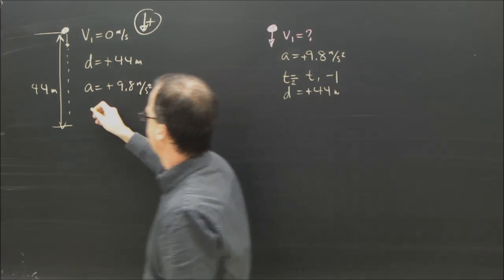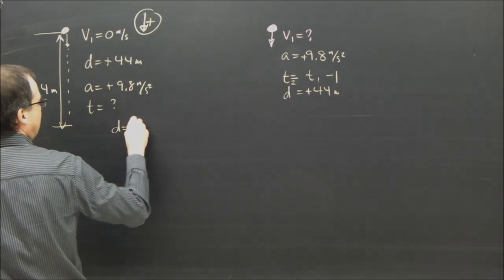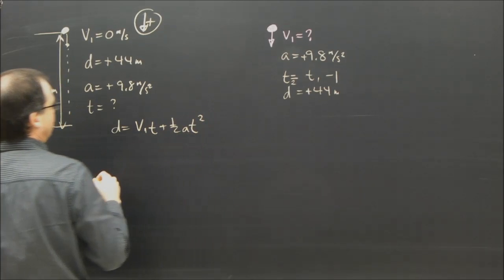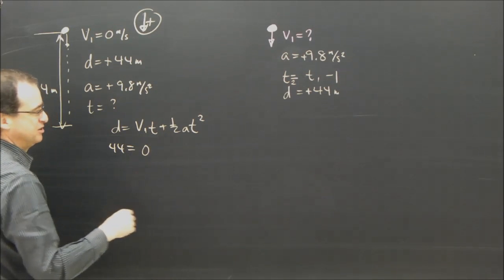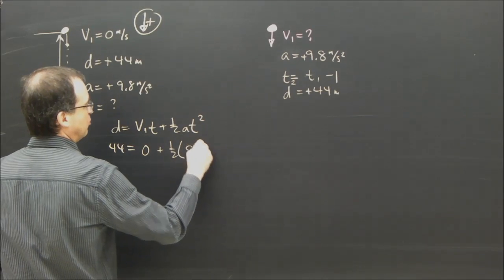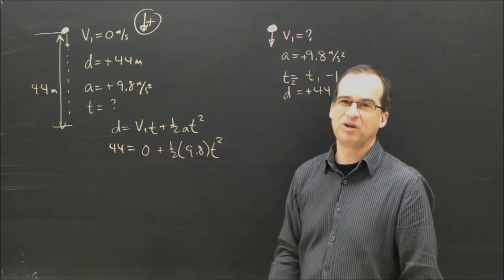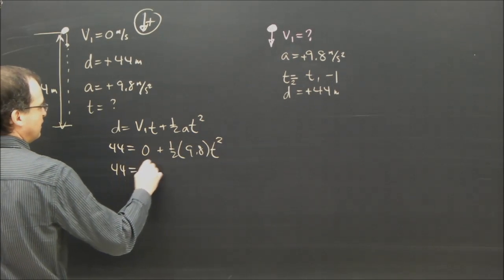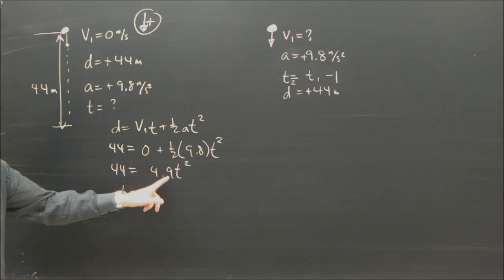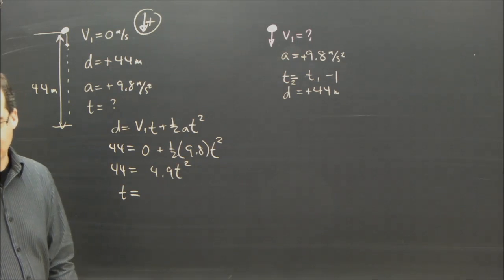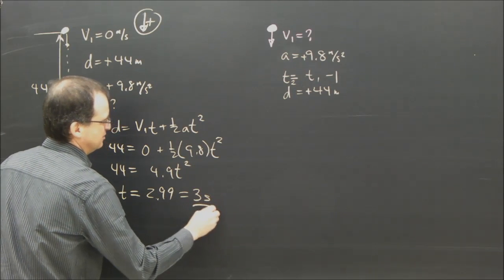So let's find out the time. I've got d, v1, a, and I'm looking for t, so I'm going to use d equals v1·t plus one-half a·t². So d is 44, it equals v1 which is 0 times t — that's 0 — plus one-half times 9.8 times t squared. Because v1 is zero, it's not going to be a quadratic; it's pretty easy to find t. So I've got 44 equals 4.9t², t equals the square root of 44 divided by 4.9, and it ends up being 2.99, which we're going to round up to three seconds.